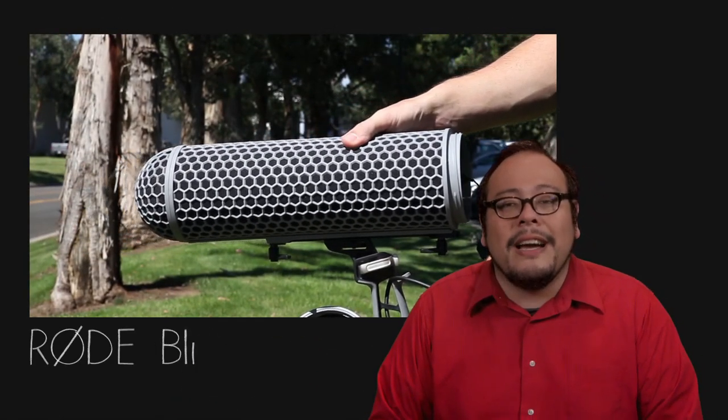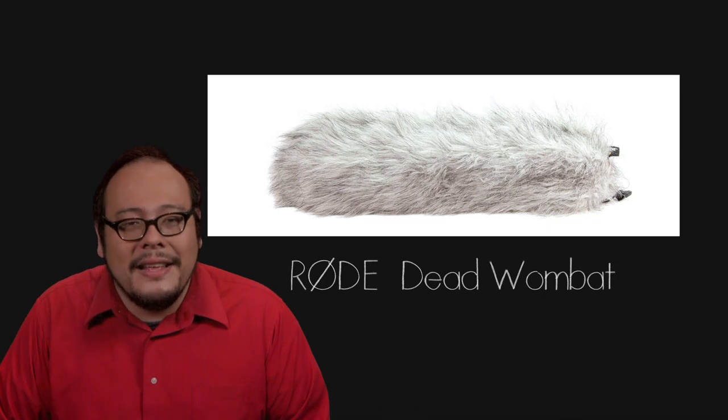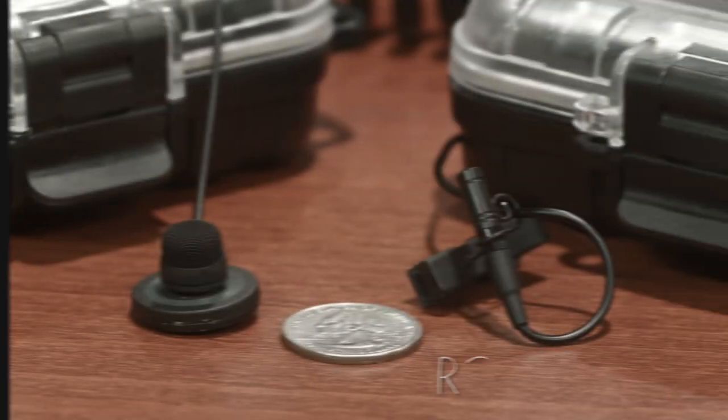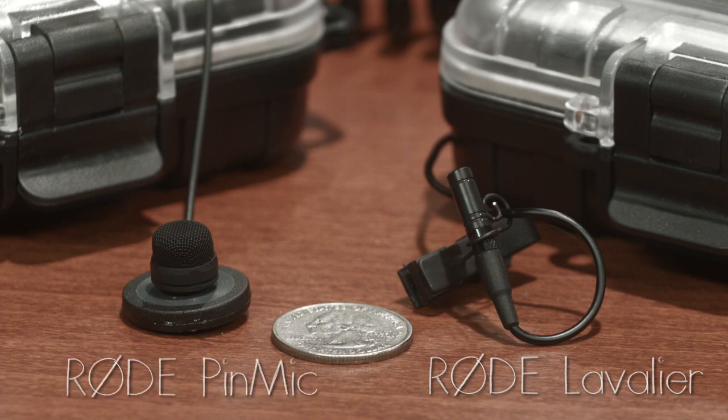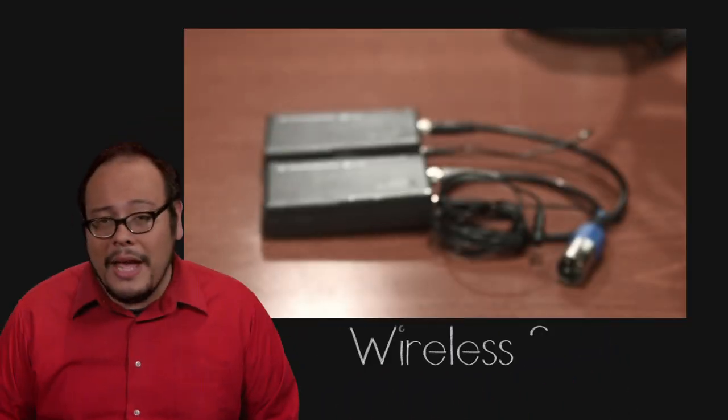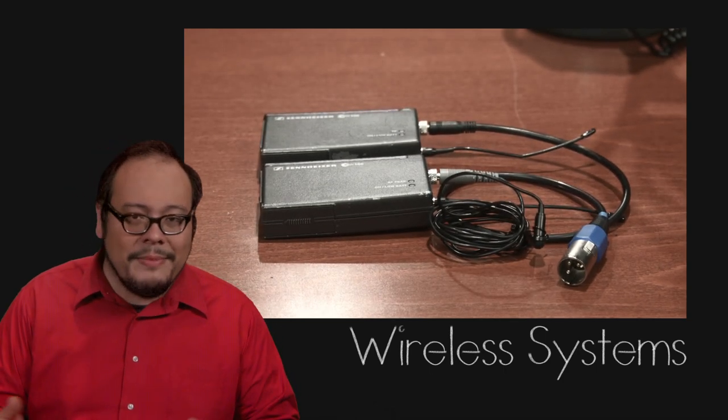Accessories like the Rode blimp are used to cut down on wind noise, with further wind protection from a muff — sometimes called a dead cat, or in Rode's case a dead wombat. The other option is lavalier mics, like the Rode Lavalier or Rode pin mic. These are generally attached on or near the chest, though lavs can be hidden anywhere — under a jacket or in an actor's hair — with care taken to avoid unwanted rustling. For documentary, corporate, and news video, a visible lav mic is fine when sound is crucial. For narrative work, invisible mics matter so they don't break the story.